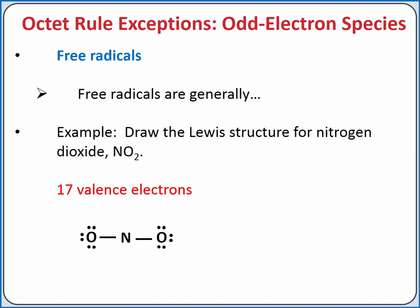Each oxygen atom wants an additional 6 electrons. Now we've used up 16 electrons. Our last electron can go on nitrogen, our central atom. Nitrogen now has 5 electrons. Although we cannot give nitrogen 8 electrons, we could create one double bond using a lone pair of electrons on oxygen, so that nitrogen will have 7 valence electrons. Since we could have also created the double bond with the oxygen on the left, we can draw our other resonance structure as well. The unpaired electron on nitrogen makes nitrogen dioxide a free radical.